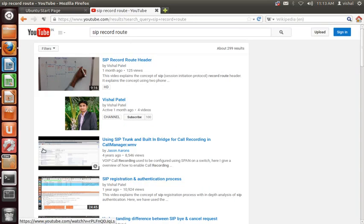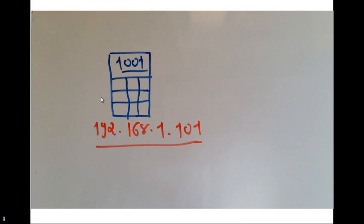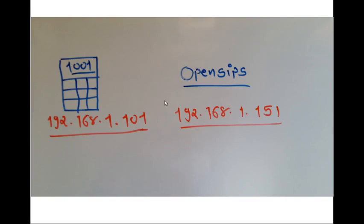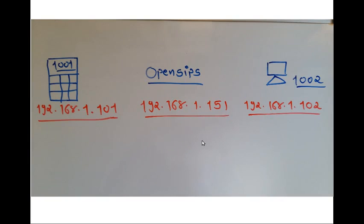Our lab setup: we are going to register phone 1001 on IP address 192.168.1.101 — that is my Android mobile phone. My OpenCPS proxy is located at IP address 1.151. One more extension, 1002, is registered on the laptop at IP address 1.102.